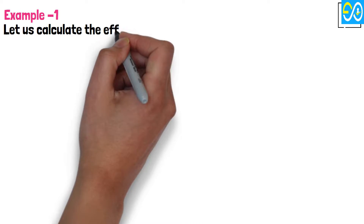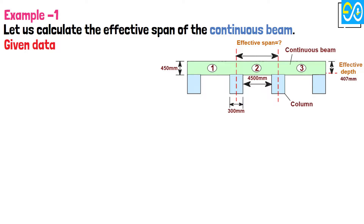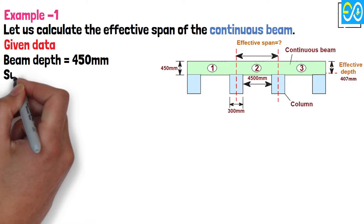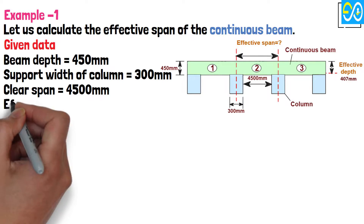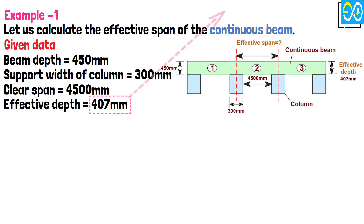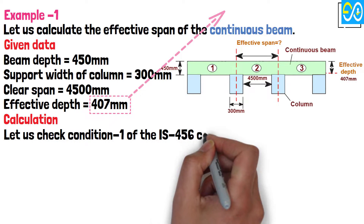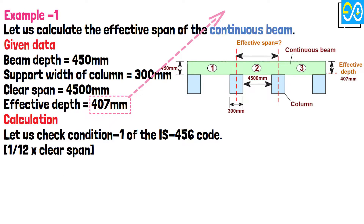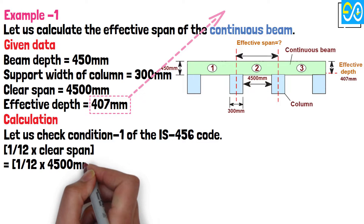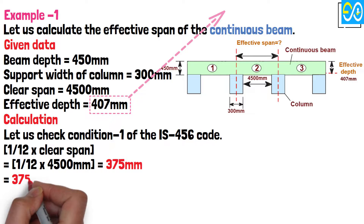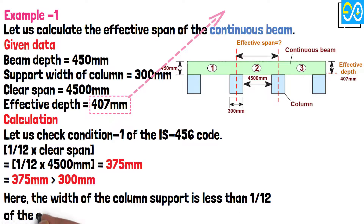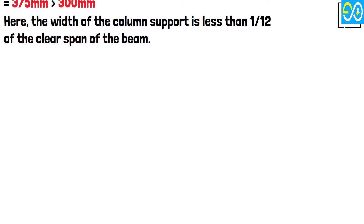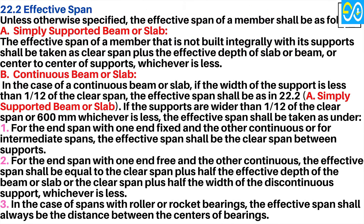Example 1: Let us calculate the effective span of the continuous beam. Given data: beam depth = 450 mm, support width of column = 300 mm, clear span = 4,500 mm, effective depth = 407 mm. Checking condition 1 of the IS 456 code: 1/12 × 4,500 mm = 375 mm, which is greater than 300 mm. Here, the width of the column support is less than 1/12th of the clear span of the beam, so the effective span shall be treated as for a simply supported beam.